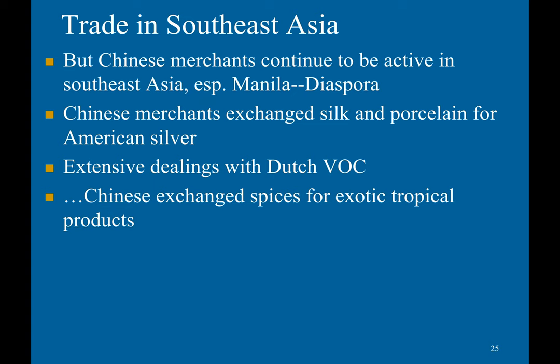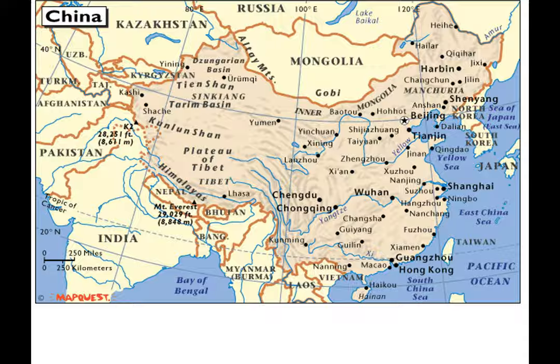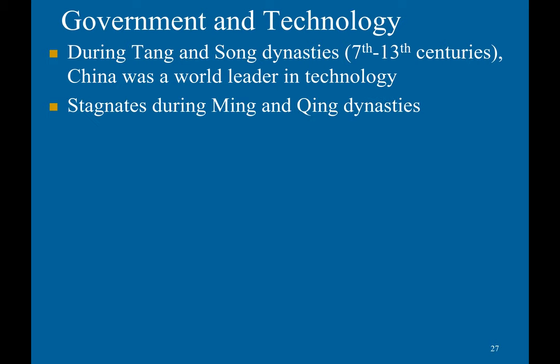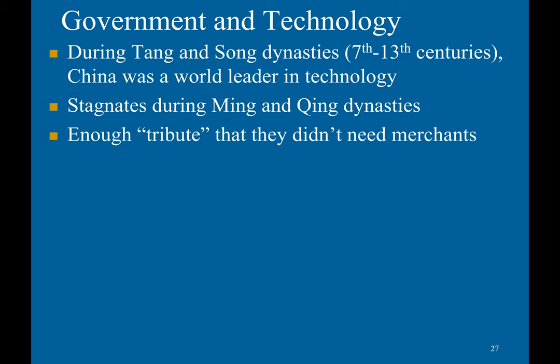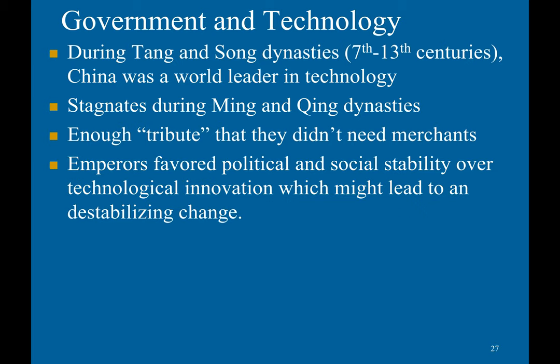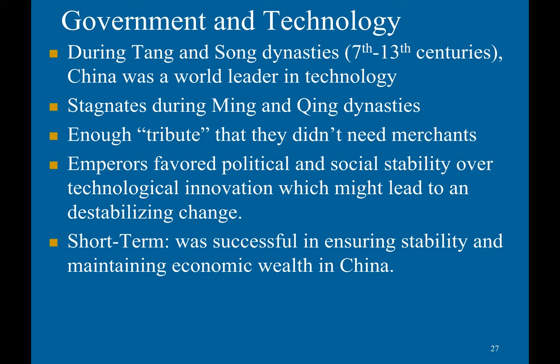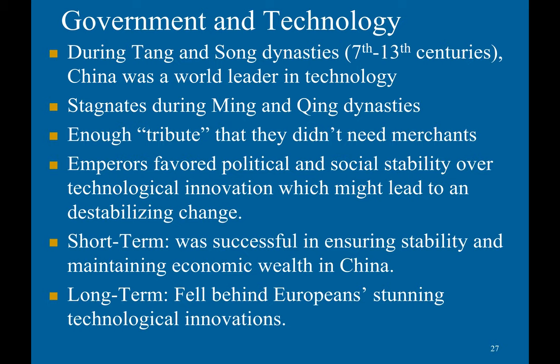During the Tang and Song dynasties, China was a world leader in technology, but stagnated during the Ming and Qing dynasties. There was enough tribute that they really didn't need merchants. Emperors favored political and social stability over technological innovation, which might lead to destabilizing change. Short term, this was successful in ensuring stability and maintaining economic wealth in China. However, in the long term, China fell behind Europeans in technological innovations.